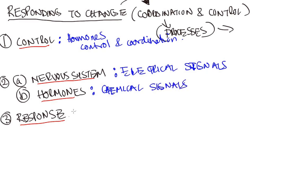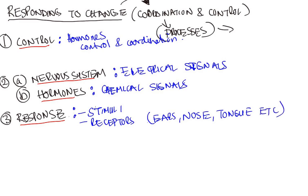The coordinated response starts with a stimulus. The stimulus is picked up by receptors—we're talking about things like the ears, the nose, the tongue, etc. So they pick up this stimulus and then what they do with it is generate an impulse.